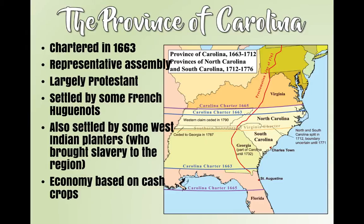You've got some French and some West Indian planters who brought slavery to the region also coming there. The economy is based on cash crops. Remember cash crops — if you're a farmer, you grow some corn for your family to eat, and then you grow some tobacco just to sell. That's a cash crop — it's not for food or sustenance for you and your family, it's just to make money.